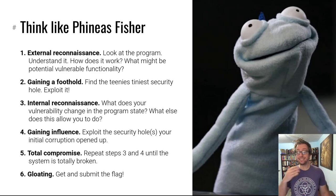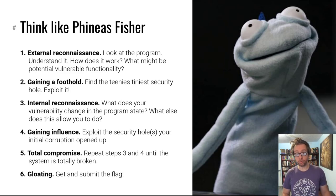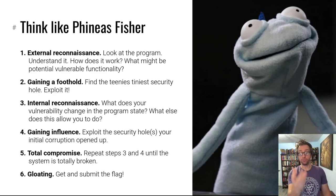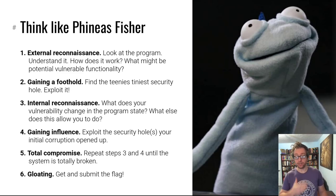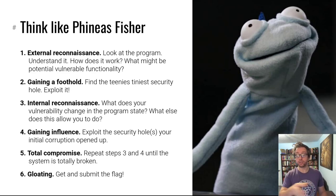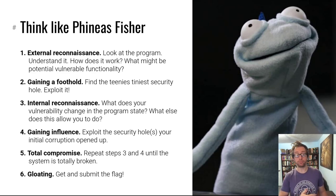Step four is gaining that influence — continuing to use the additional weaknesses you have introduced into the program by taking advantage of one vulnerability to continually chain and build on your capabilities as an attacker within the program. This is fairly vague and depends very much on the programs you're trying to exploit. This module will really be about learning through practice. But the general steps are these: after performing internal reconnaissance, understanding what control you have and what next steps are possible, eventually the program will be completely compromised.